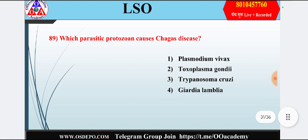Question 29: Which parasitic protozoan causes Chagas disease? Option 1: Plasmodium vivax; option 2: Toxoplasma gondii; option 3: Trypanosoma cruzi; option 4: Giardia lamblia. Answer is option 3 — Trypanosoma cruzi.